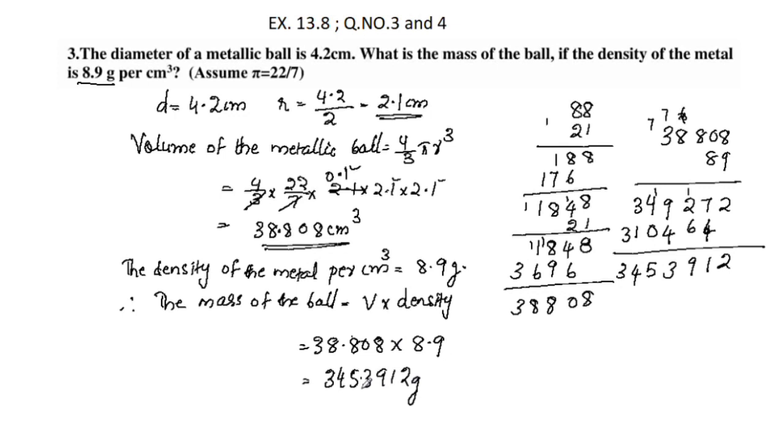Placing the decimal point gives us 345.3912. This is the mass of the metallic ball.